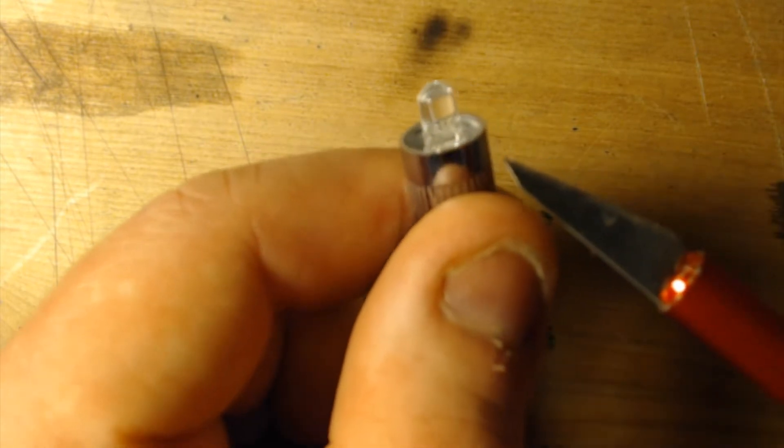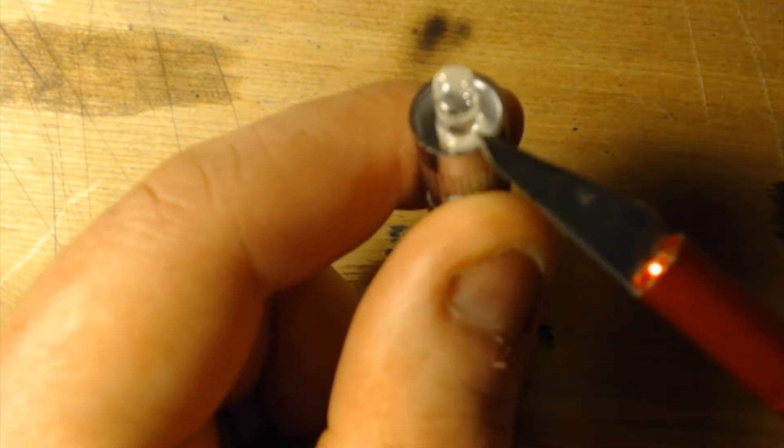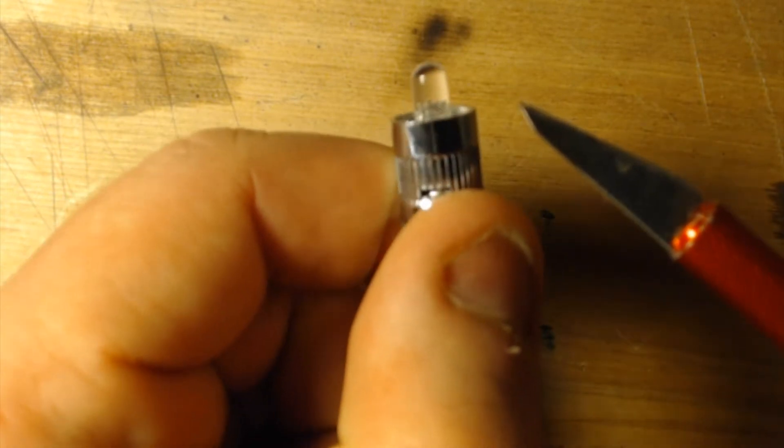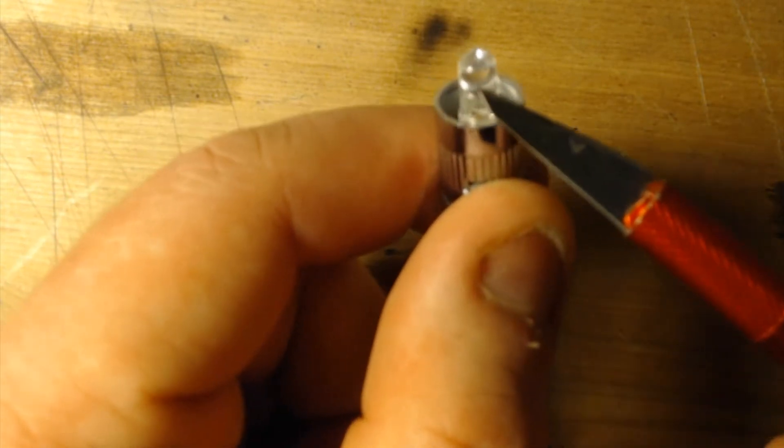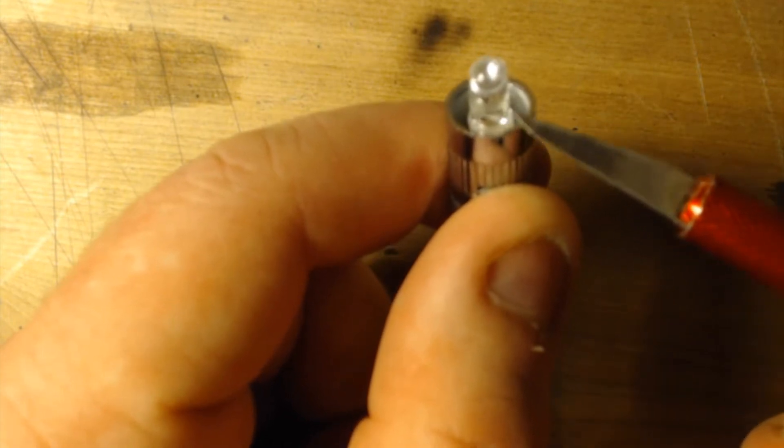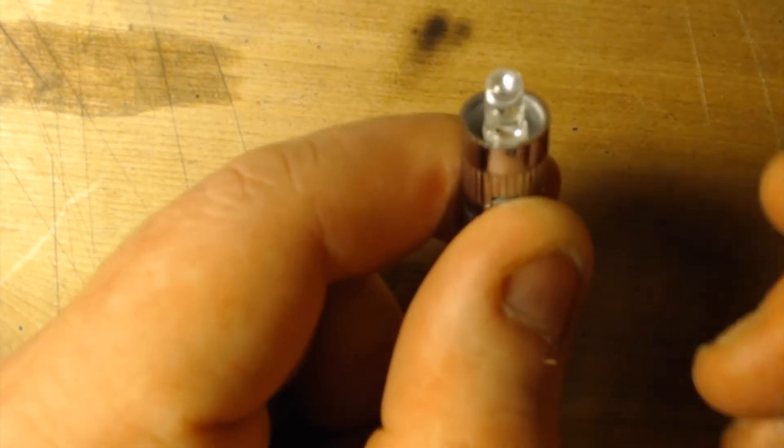That little black dot that sits there on, I believe that's on the anode—that little tiny dot right there, that's actually the 555 timer circuit now. That's how small they've been able to shrink these things.